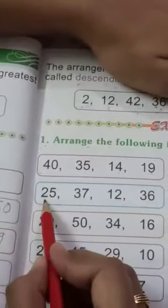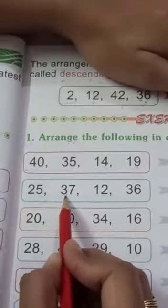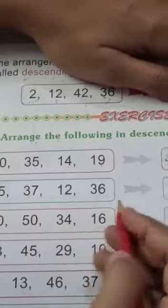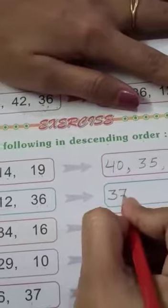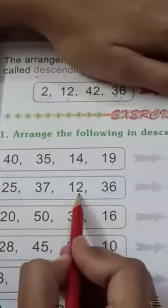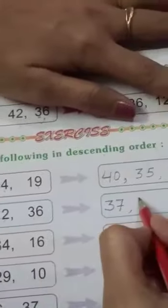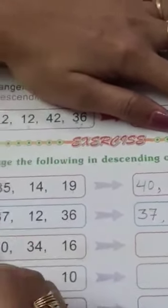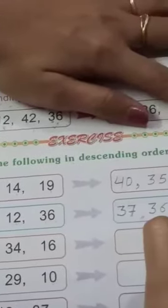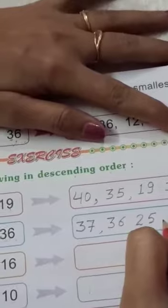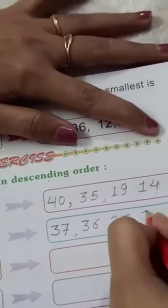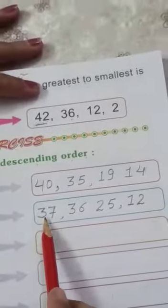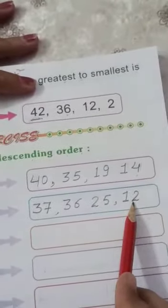Now number 2. 25, 37, 12, 36. Which number is greatest number? 37. Then 25, 12, 36. Which is greater? Which is greatest number? 36. Then 25, 12. 25 is greater than 12. And now number 12. 37 is greatest number and 12 is smallest number.